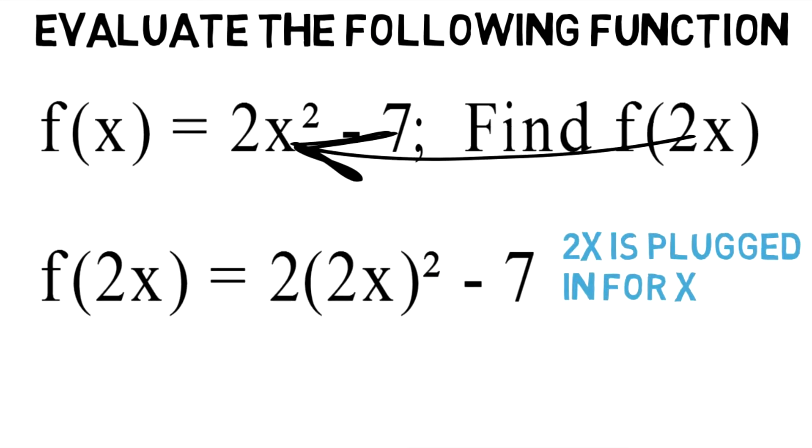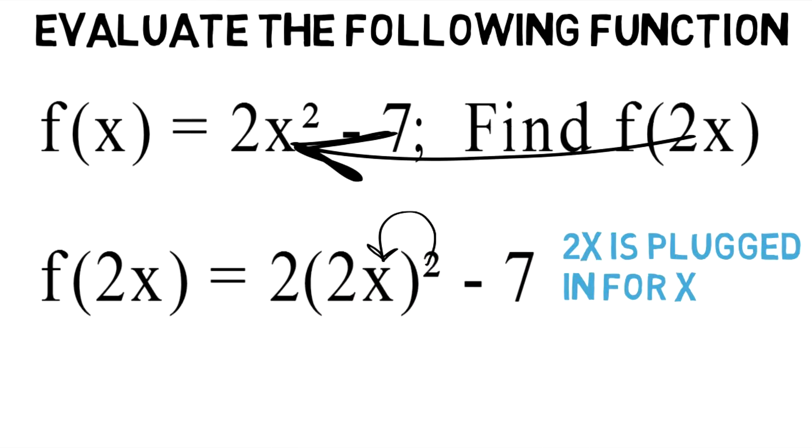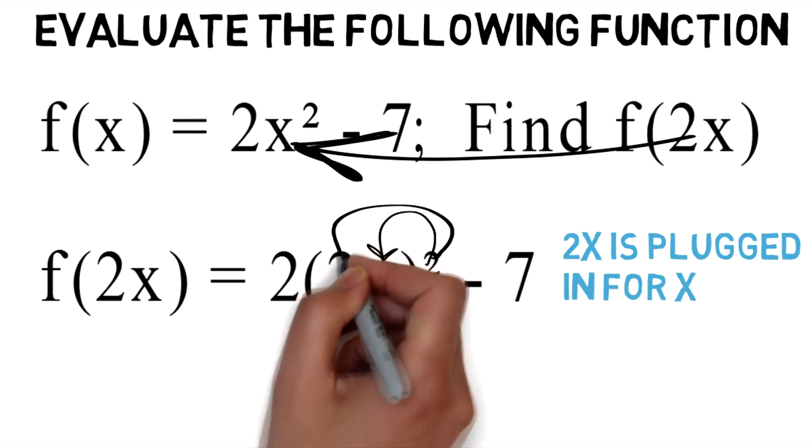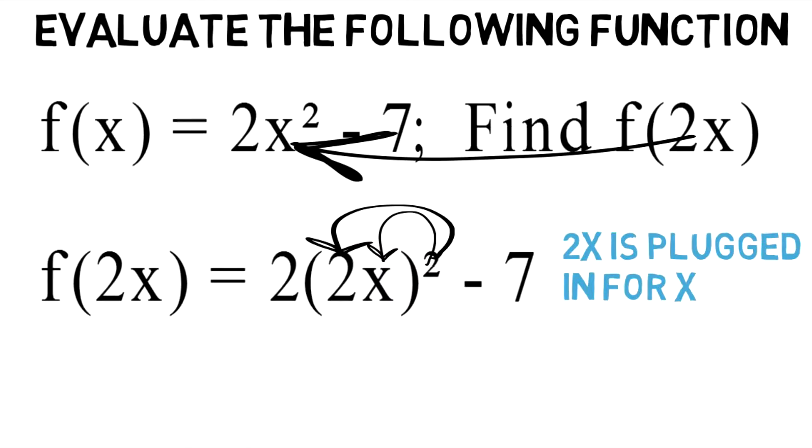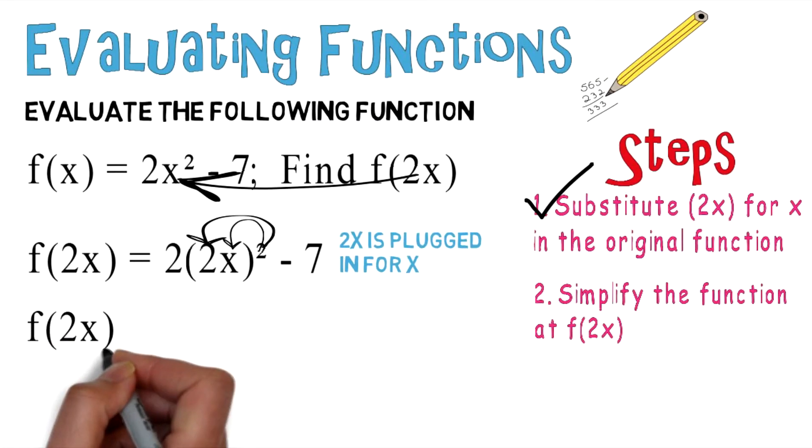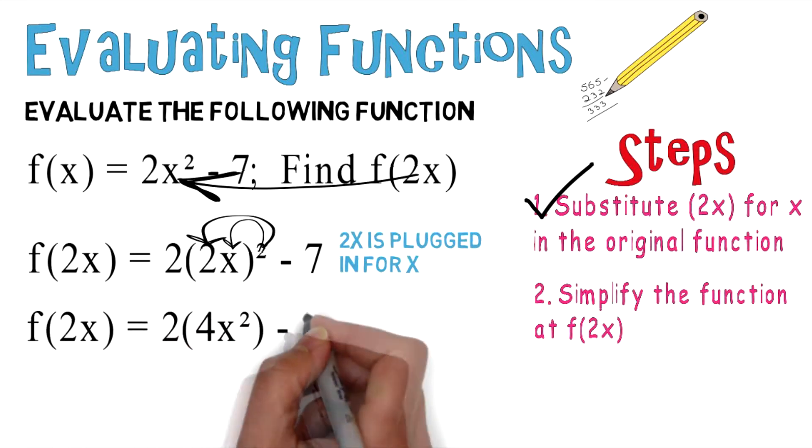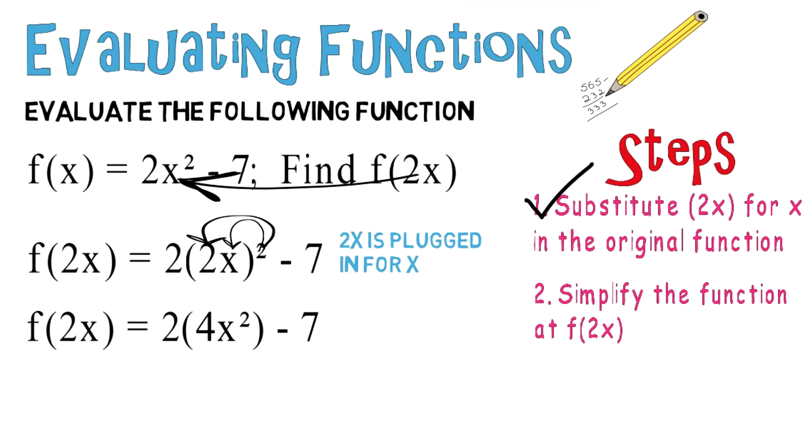And to simplify, don't forget to distribute the squared sign to both the x and to the 2. Therefore, you wind up with f of 2x equals 2 times 4x squared minus 7. You want to continue to simplify.